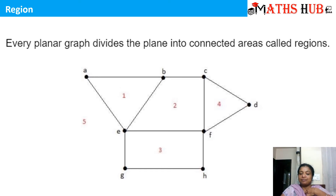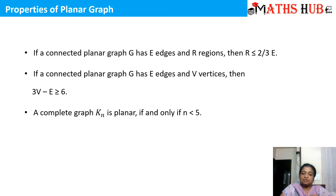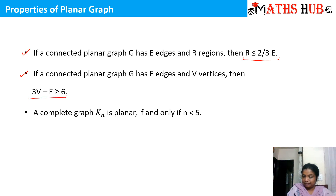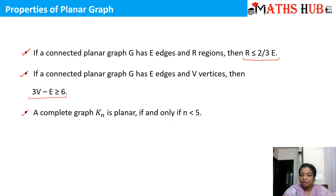Now let's talk about the properties of a planar graph. The first property says that if a connected planar graph G has E edges and R regions, then R is always less than or equal to 2/3 times the number of edges. The second property gives a relationship between vertices and edges: 3V minus E is always greater than or equal to 6. The third property says that a complete graph K_N is planar if and only if N is less than 5.